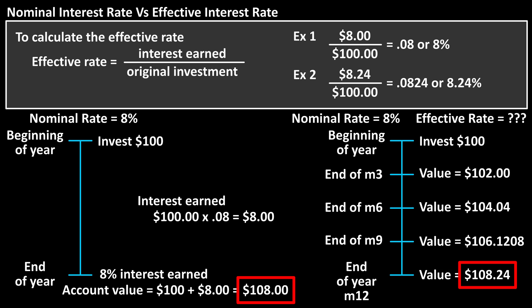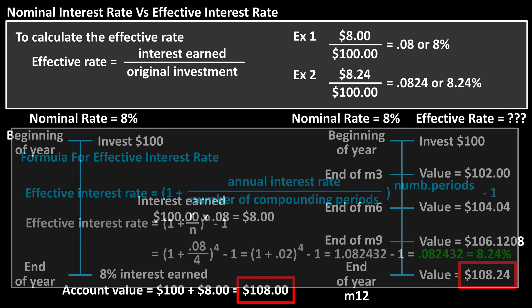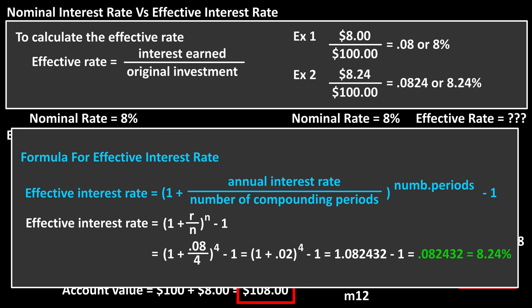So to sum things up: if interest is only compounded once per year, then the nominal rate and effective rate are the same. And if the interest is compounded more than once a year, then the effective rate will be higher than the nominal rate. Here is the formula to calculate the effective rate, with all variables listed and the calculation using our numbers from example 2.